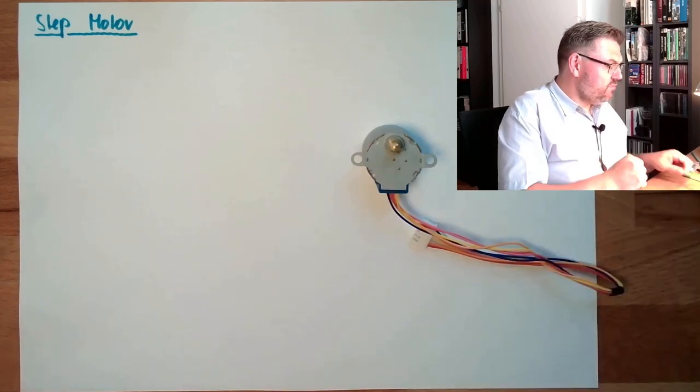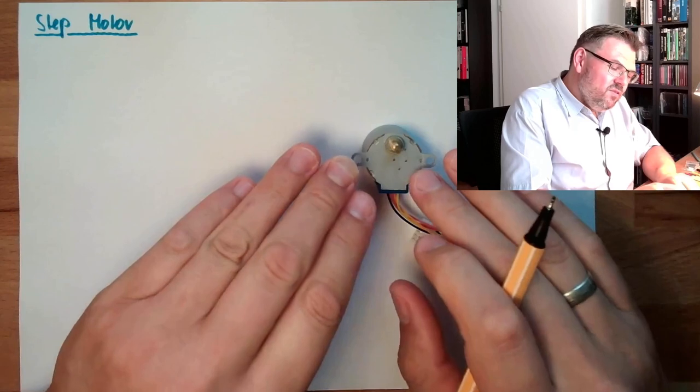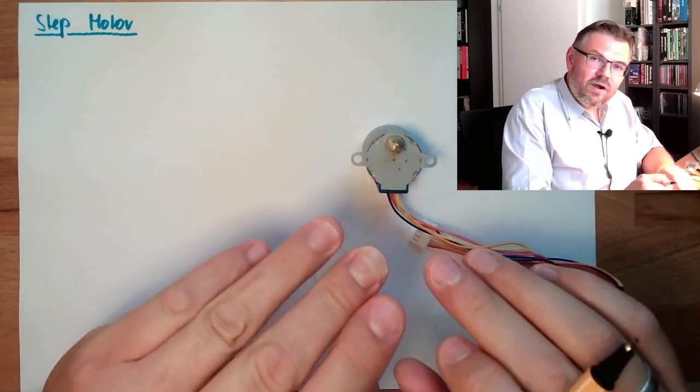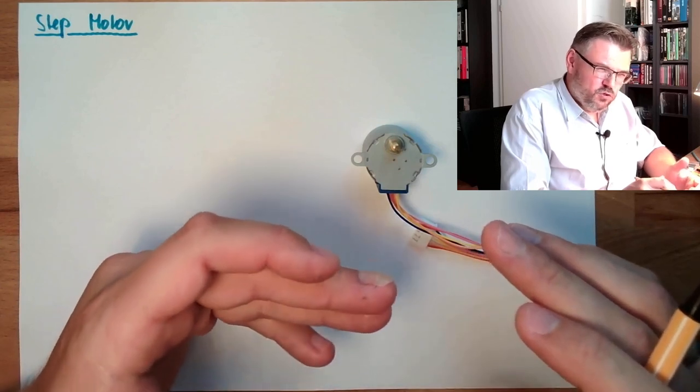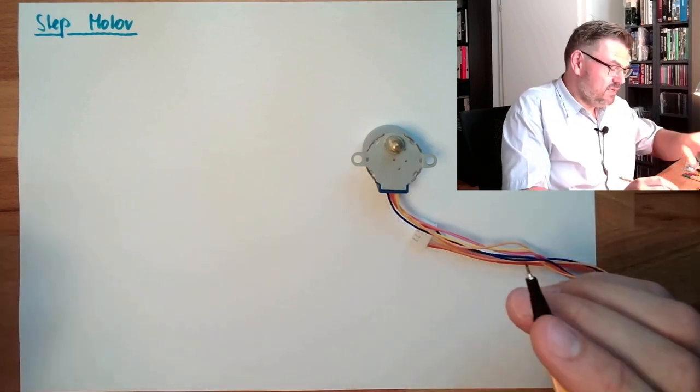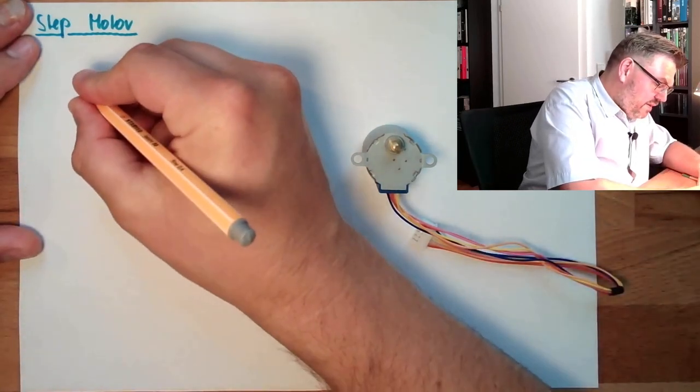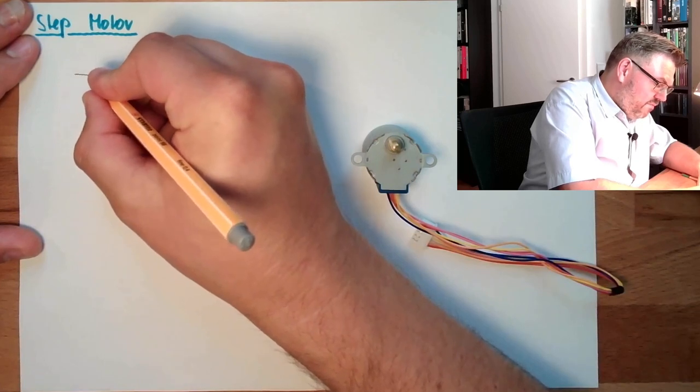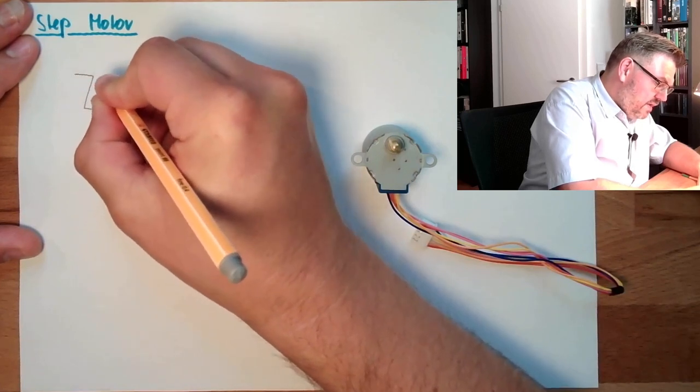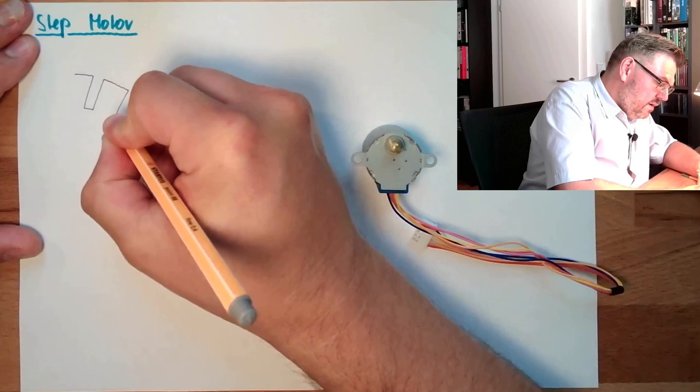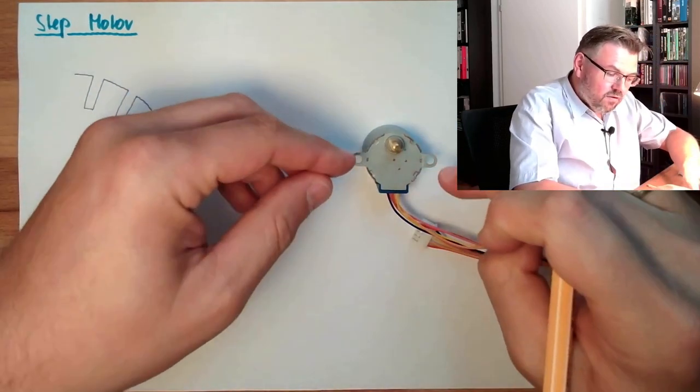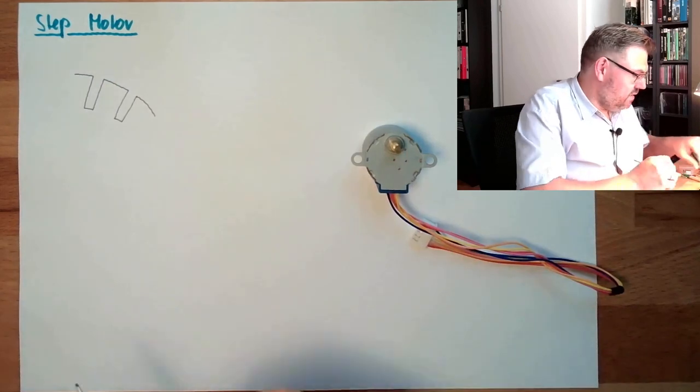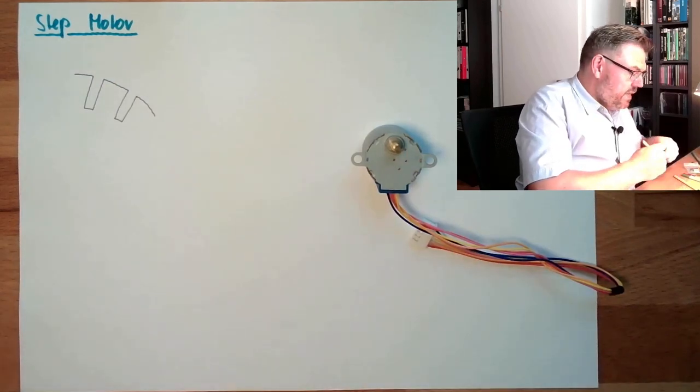So how is this working? The internal construction might differ, or differs for sure, but from principle, from basic principle, you can think about that you have somewhere here, let's say, a coil and here the next coil. On the outside, on the stator. So here is one coil.